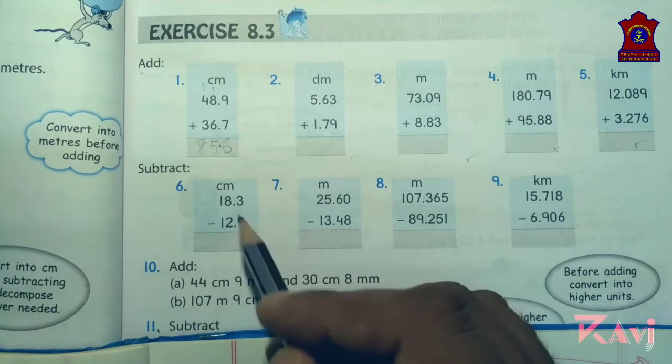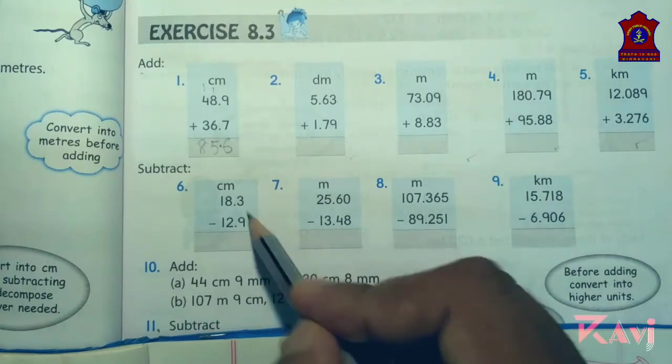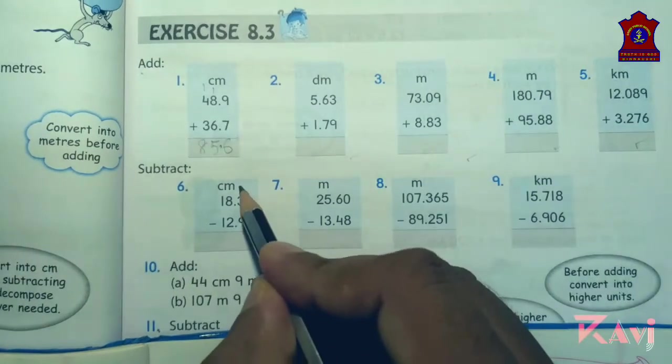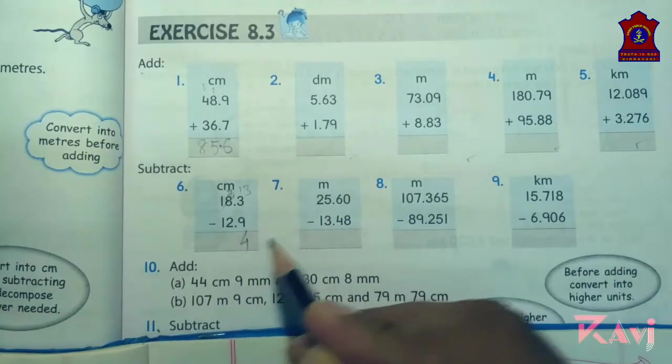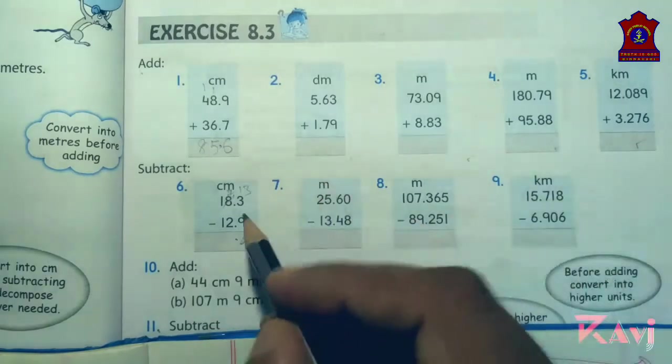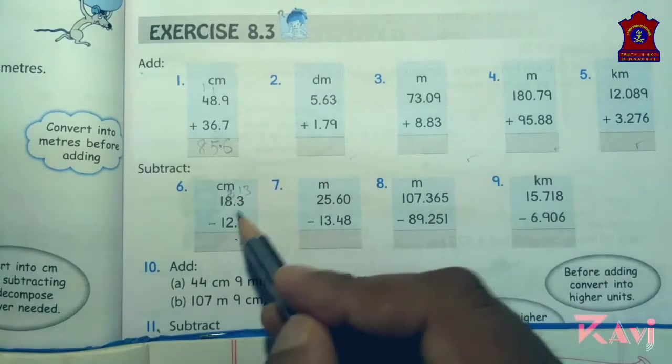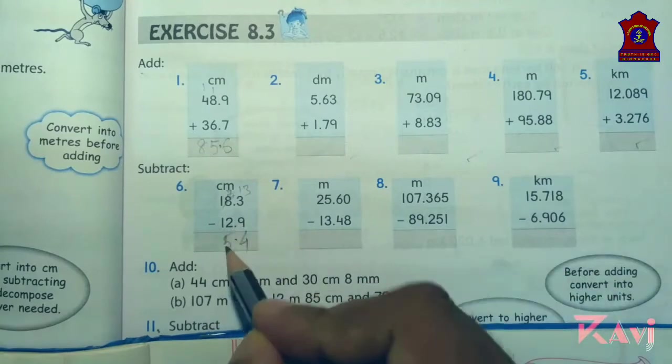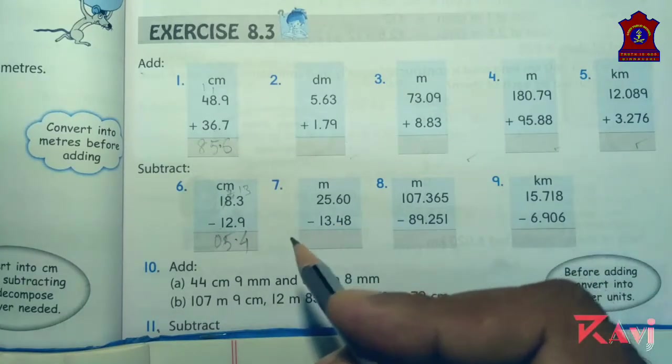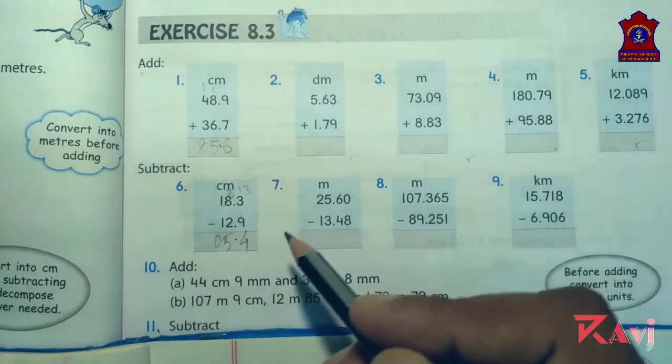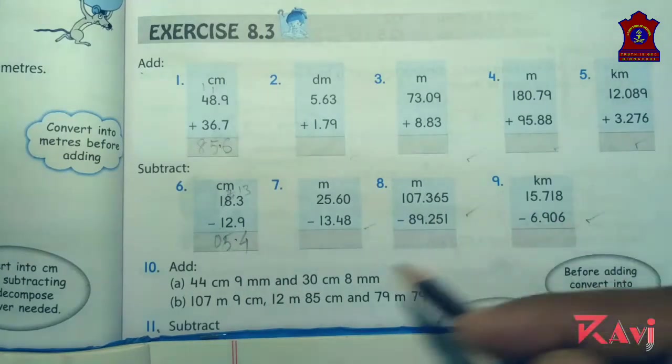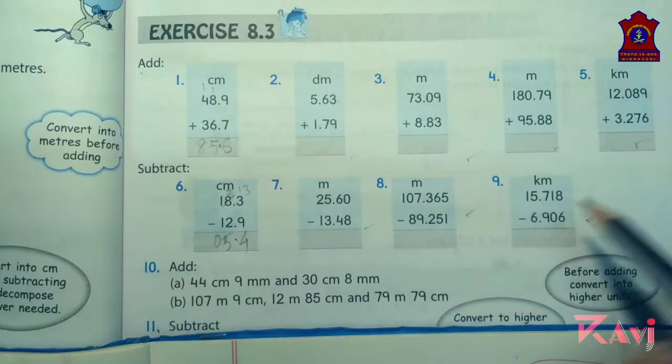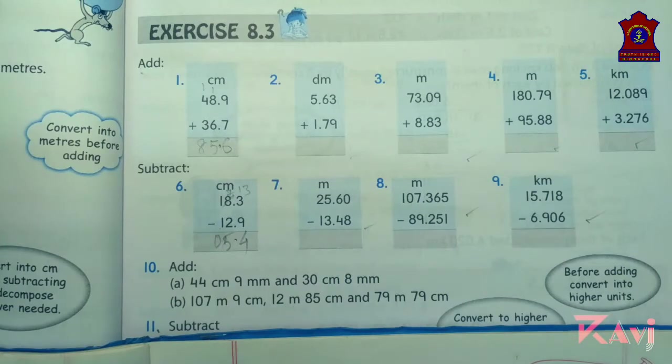See here simply in question number 6 you need to subtract. So 3 minus 9 is not possible, so here it is 13. 13 minus 9 is 4. There was a decimal. Now 7 minus 2 is 5, and 1 minus 1 is 0. You can write 0 or remove 0, so the value is 5.4. Other questions you can do in book by yourself. Now we will be starting today from question number 10.